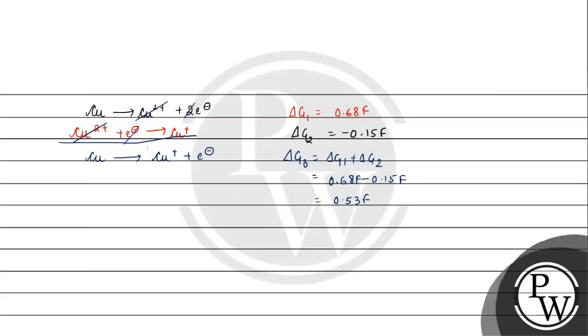ΔG₃ will also equal -1 × F × E°, so E° for oxidation of copper to copper plus will be -0.53V.